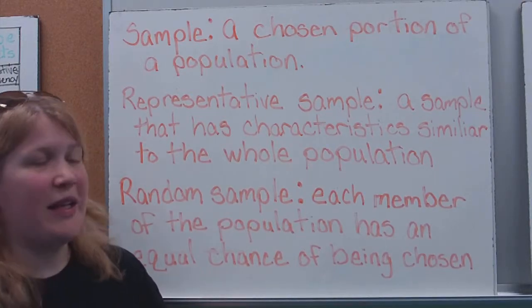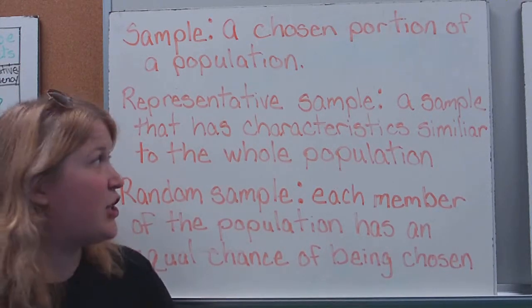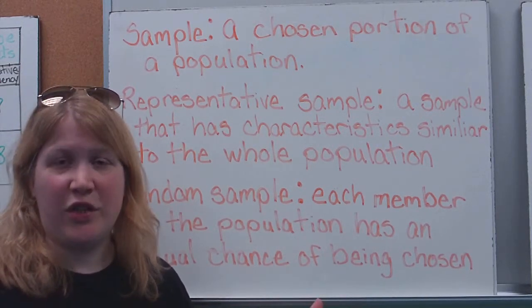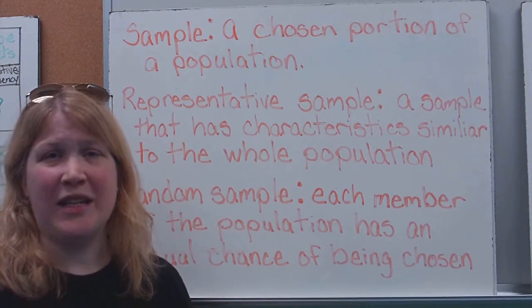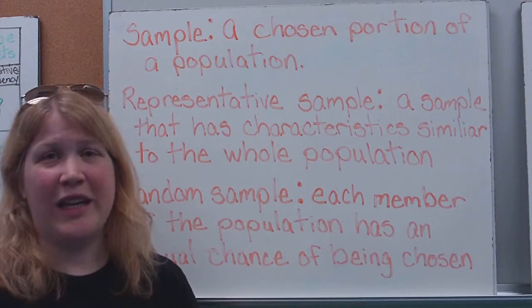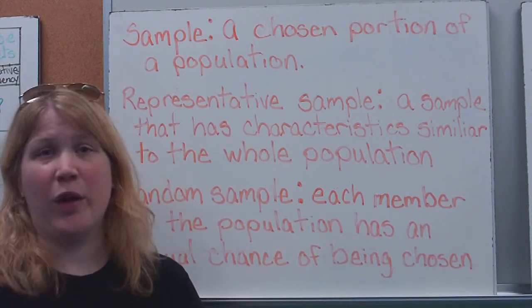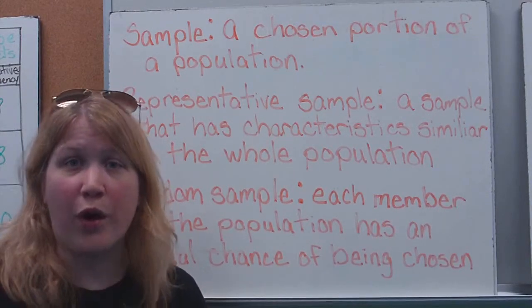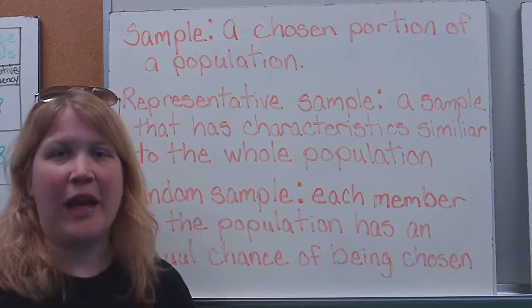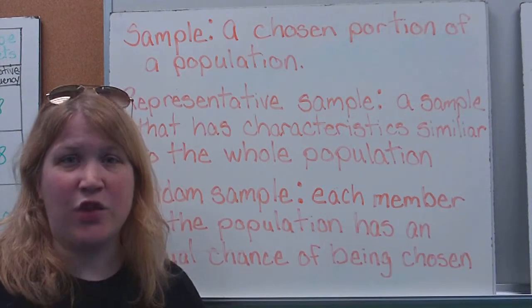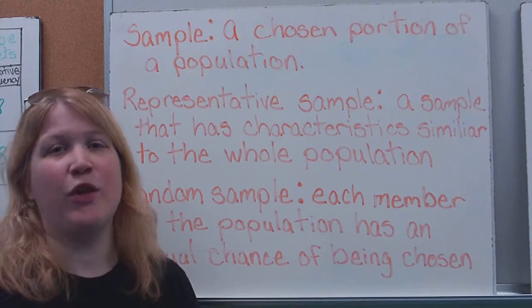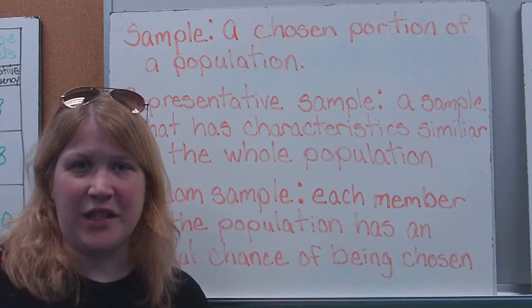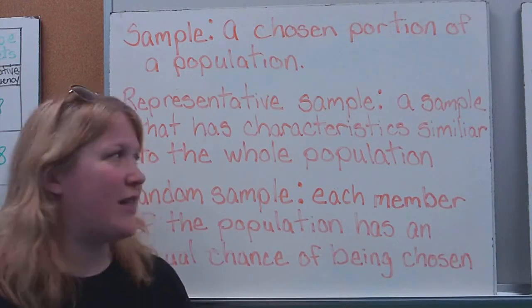Now, a representative sample means we've chosen a sample or a portion of our population that has similar characteristics to the whole. So, for example, if we were going to use the King's Christian School as an example, a representative population means we're going to get an equal number of children from each grade that we're asking. We're going to ask teachers, staff members, administrators, some members of the board, just to make sure that we have a good sampling of everyone within that school. That would be a good representative population, meaning I didn't just ask seventh graders or just teachers because that's kind of a biased one, and we'll get to that word in a minute.